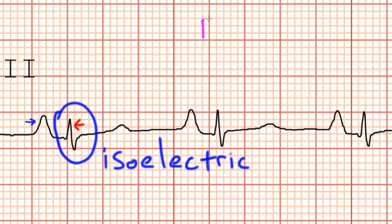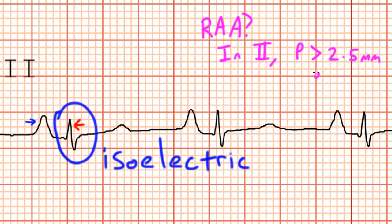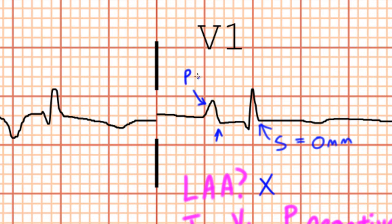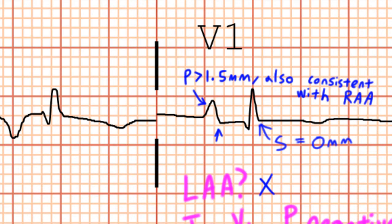For right atrial abnormality, we look in lead 2 for a P-wave that's taller than 2.5 millimeters. Looking here in lead 2, we can see that this P-wave is quite tall — in fact, it looks like it's taller than the R-wave. So I'm going to say this is right atrial abnormality. Also, looking in lead V1, the P-wave is taller than 1.5 millimeters, which is that optional criteria, also consistent with right atrial abnormality.